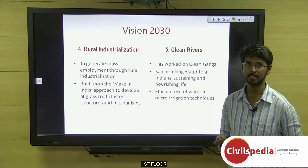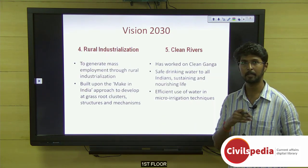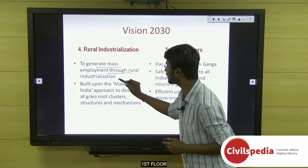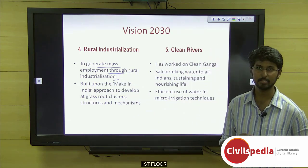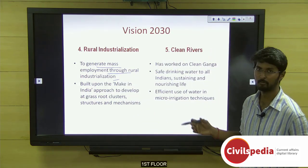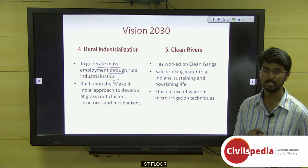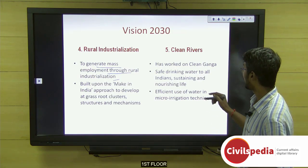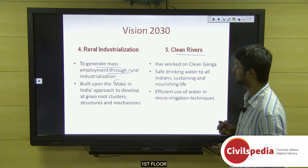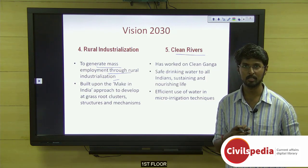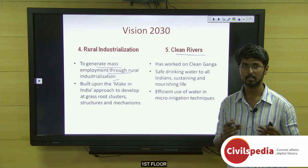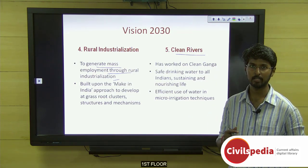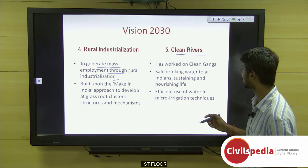The fourth dimension is rural industrialization — developing villages as rural industrialized clusters to generate mass employment. This will build upon the Make in India approach, with villages becoming clusters of production. India is already known as a manufacturing hub in certain sectors and will build upon that.